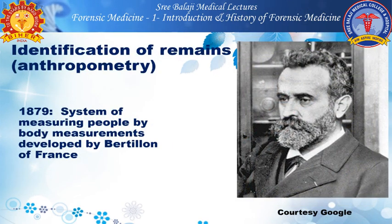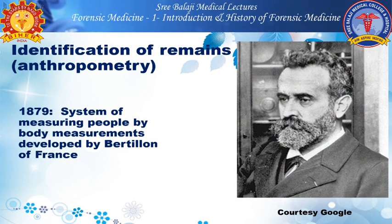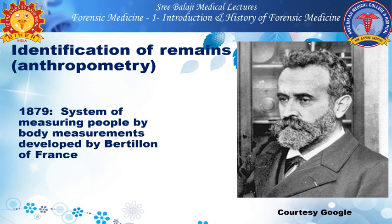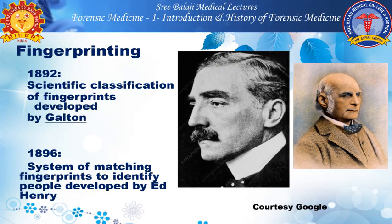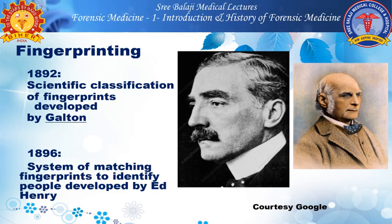Dr. Bertillon of France was involved in identification of remains — that is anthropometry — in 1879. He developed a system of measuring people or body measurements: length, breadth, height, width — known as the Bertillon system. Fingerprinting was developed by Sir Galton, who gave a scientific classification of fingerprints in 1892. In 1896, Ed Henry gave a system of matching fingerprints to identify people.